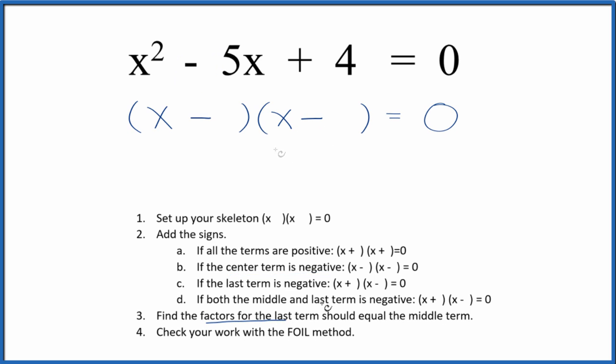Now we can find the factors for that last term, the 4 here, that should equal the middle term. They'll add up to the middle term.